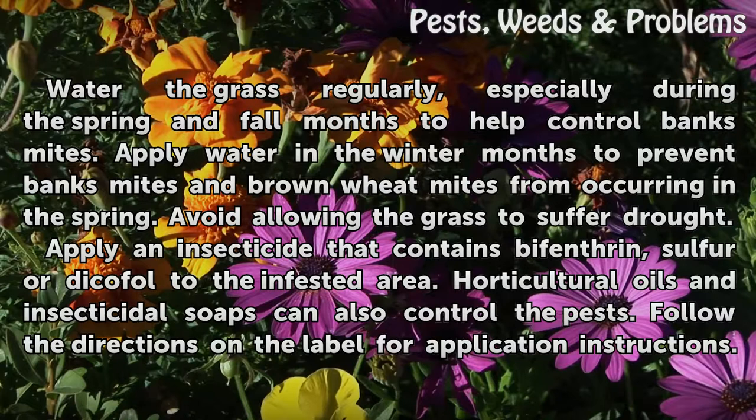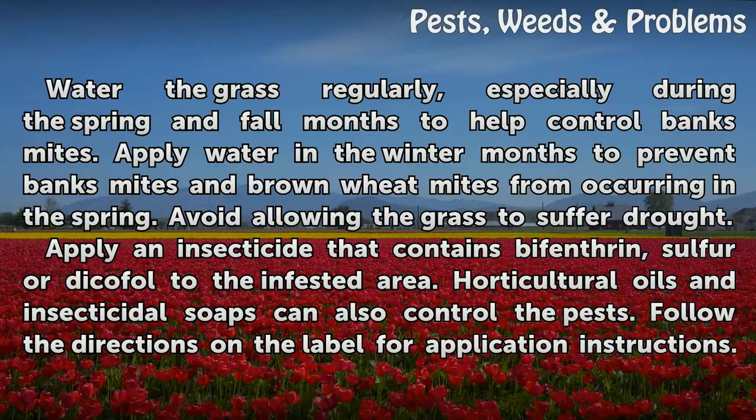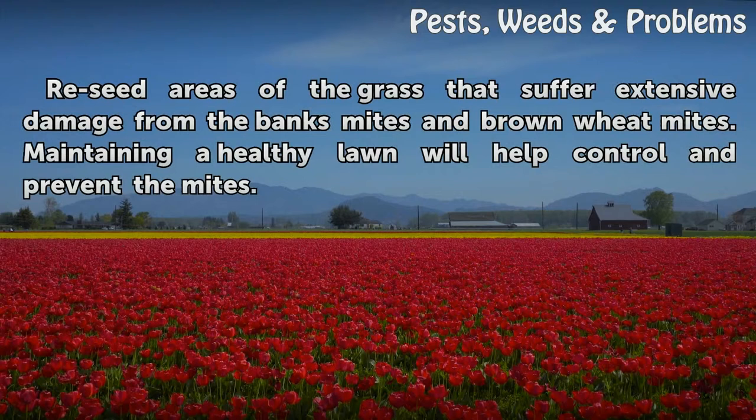Apply an insecticide that contains bifenthrin, sulfur, or dicofol to the infested area. Horticultural oils and insecticidal soaps can also control the pests. Follow the directions on the label for application instructions. Re-seed areas of the grass that suffer extensive damage from the Banks mites and brown wheat mites. Maintaining a healthy lawn will help control and prevent the mites.